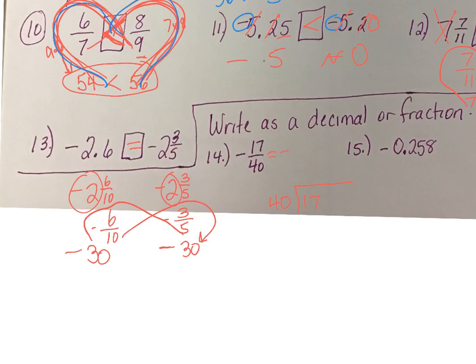Does 40 go into 17? Nope. Zero decimal point. Forty into 170 is 4. That's 160. Subtract to get ten, I've got to put another zero on there. Forty into 100 is 2, that's 80. Subtract to get twenty, I've got to bring down another zero. Forty into 200 is 5. Five times forty is 200. This is what kind of decimal? Doesn't repeat, it terminates.